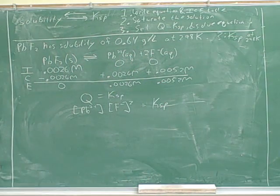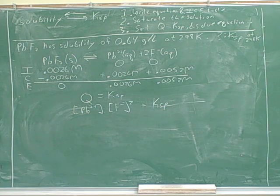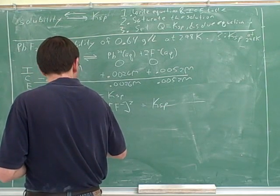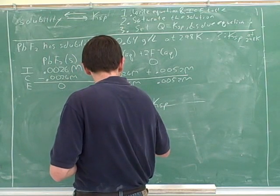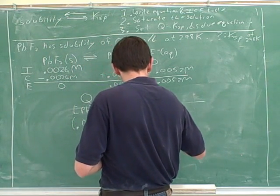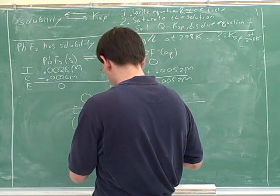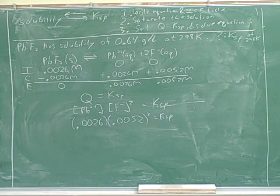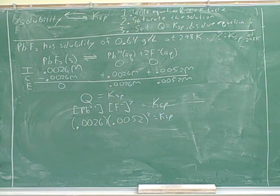We need to find Ksp, so we just basically multiply those in groups. There is a question: do I always have to put squared here and multiply twice? Yes — you mean multiply by 2? Yes, that's a good point. Let's talk about that after we finish the problem.